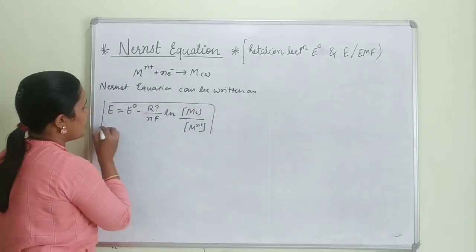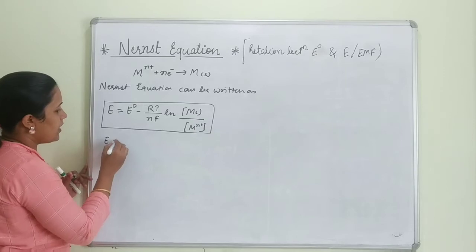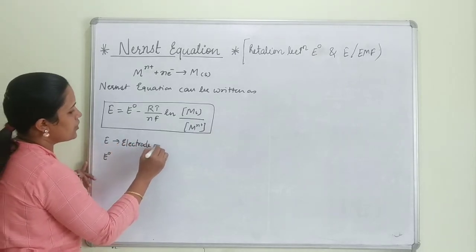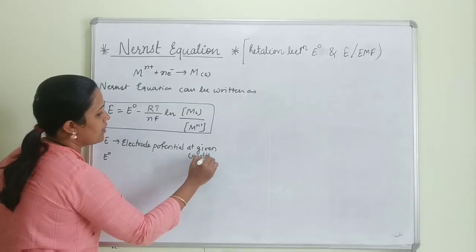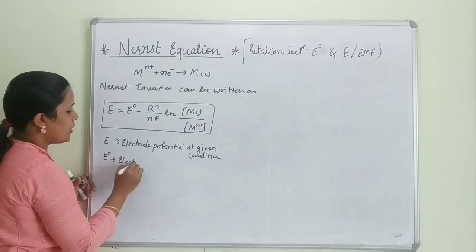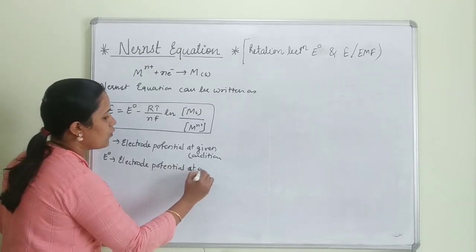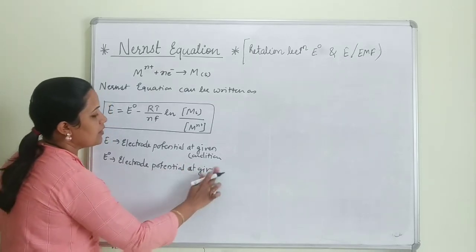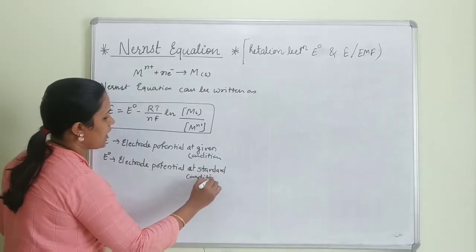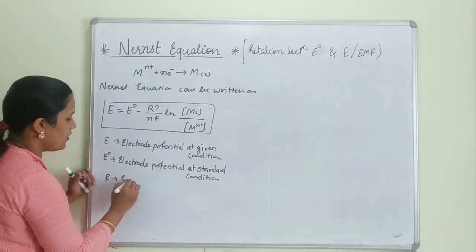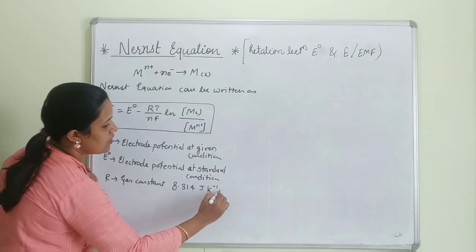This is our Nernst equation. Now let's understand what each variable represents. E is the electrode potential at the given condition. E° is the electrode potential at standard condition. Please note these down in your copy. R is the universal gas constant, with a value of 8.314 J K⁻¹ mol⁻¹. T is the temperature, which has a value of 298 Kelvin.